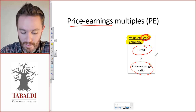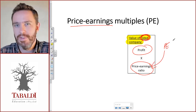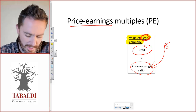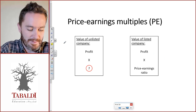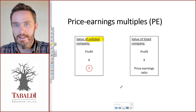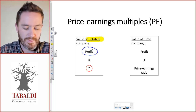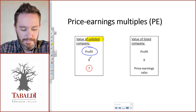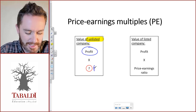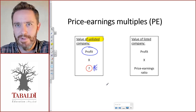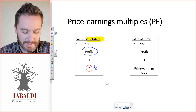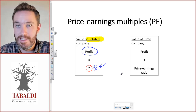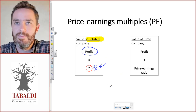So how do we value an unlisted company? The principle will be the same — we'll have a profit for the unlisted company from its financial statements — but we can't multiply it by a PE ratio because we don't have a PE ratio, because we don't have a share price. We want to calculate the value, so where do we get an appropriate price earnings ratio to multiply by profit to get the value of the unlisted company?